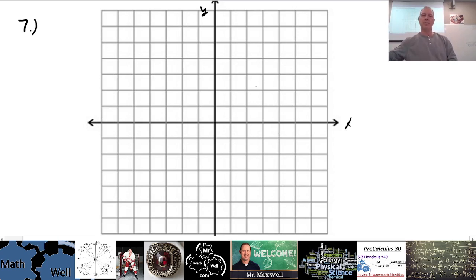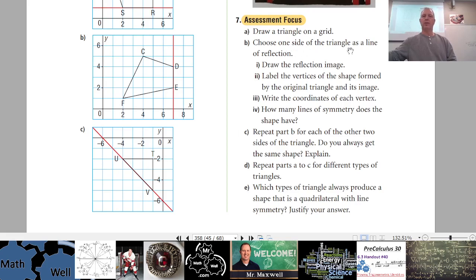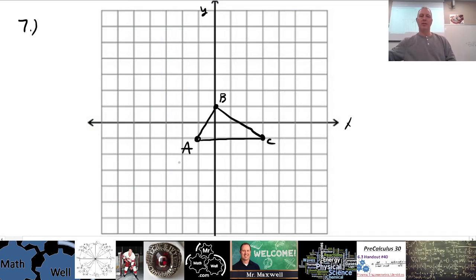Let me draw the triangle more in the middle and label the vertices A, B, and C. The question says choose one side of the triangle as a line of reflection — we've done that in number five as well — and then draw the reflection image. I'm going to choose side AB as the mirror line.